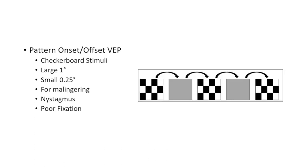Pattern onset/offset VEP: here the pattern changes from a checkerboard directly to a gray stimulus — there is no reversal. It also has large and smaller checkerboards and is preferred for patients who have nystagmus, poor fixation, or are malingering. For pattern reversal VEP to be done, the patient should have vision of at least 6/18 so they can fixate and cooperate.